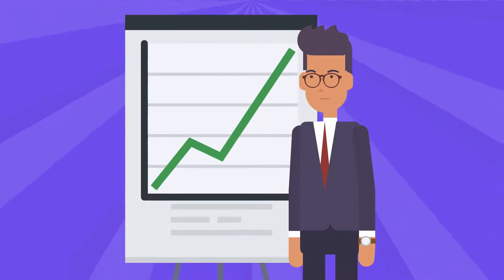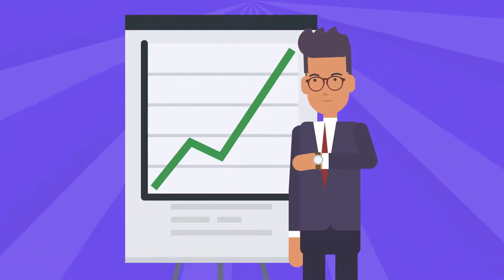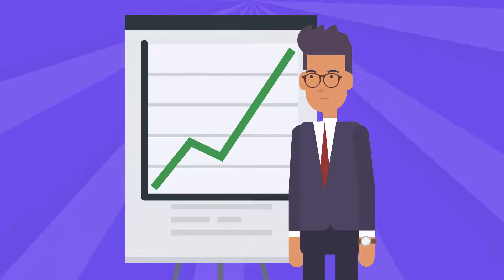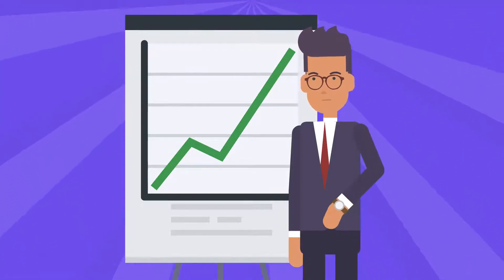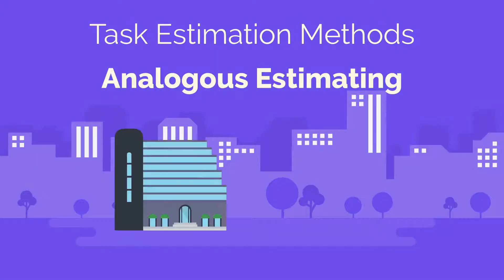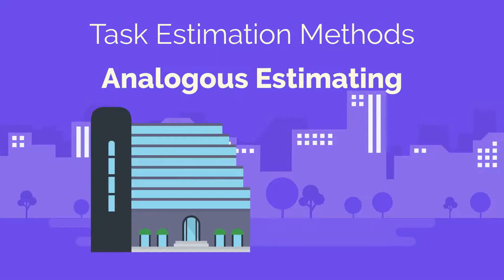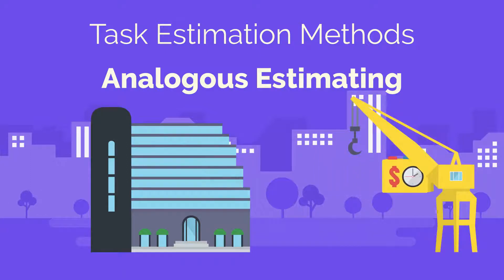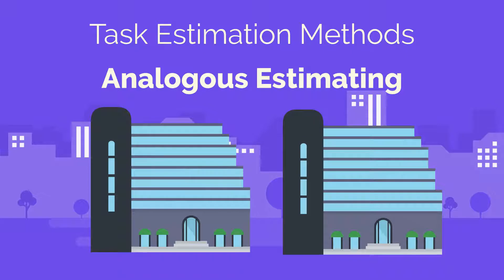When approximating task times, there are several estimation method options you can use to gather information. Task estimation methods include analogous estimating. This technique is the act of using former projects to estimate how long or how much a current project will take or cost. In other words, it's a technique that centres on comparison.